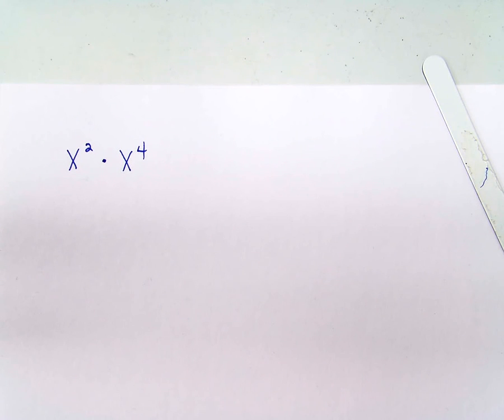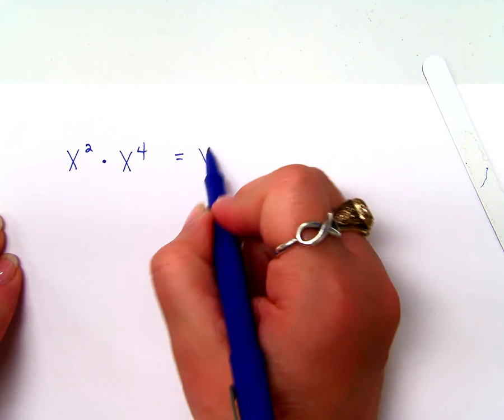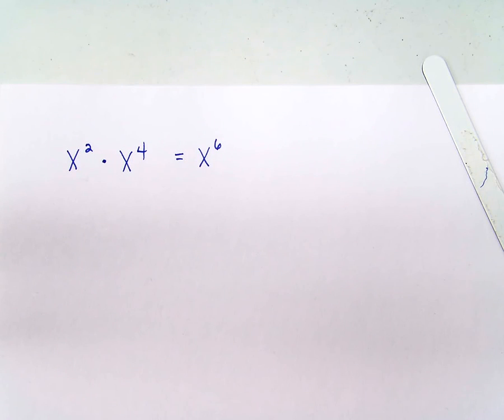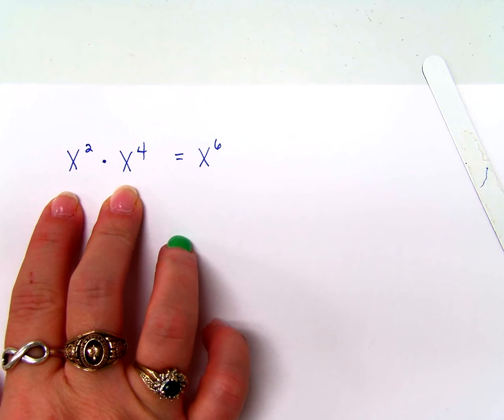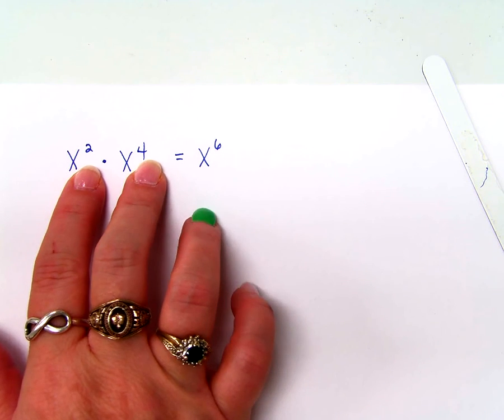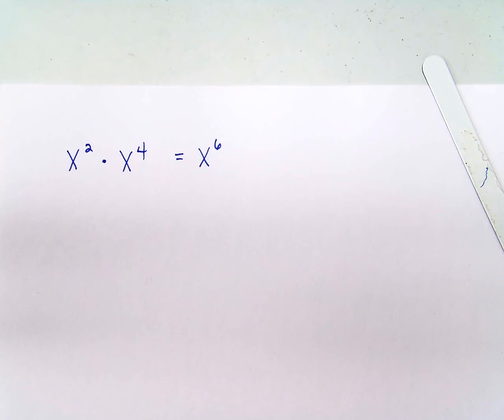X squared times X to the fourth, what's the answer to that? X to the sixth, right? And how do you know it's X to the sixth? When you're multiplying like bases, you add the exponents. I'm okay with that.